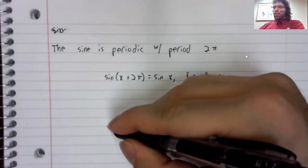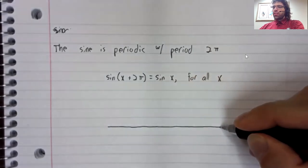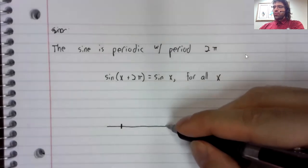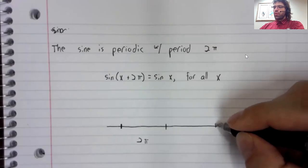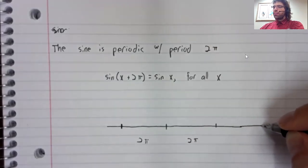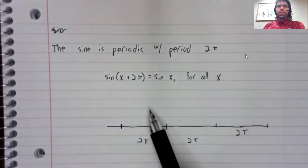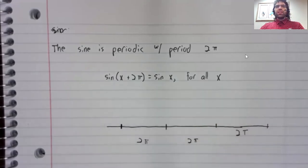And what that means is that if you take the x-axis and cut it into pieces of length 2π, the graph is going to look the same in each of these pieces.